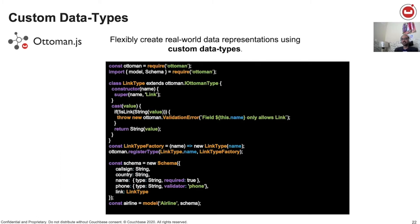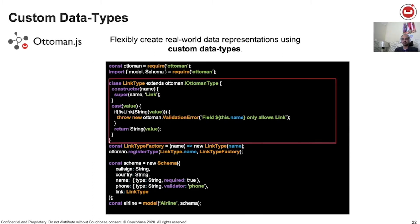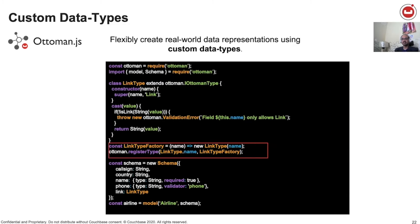In addition to the default data types provided by Ottoman, you can now create your own data type by simply following three steps: create the data type by extending iOttomanType — in this example, we are creating a data type that can accept a hyperlink — then register the data type, and lastly, use the data type. Isn't that simple?